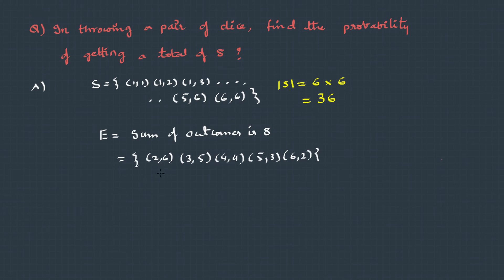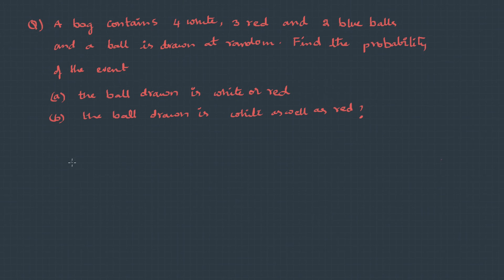Therefore, these are the possible outcomes: 2,6, 3,5, 4,4, 5,3, 6,2. In each of these cases, the sum of the two is 8, and these are 5 outcomes. So the probability is the favorable outcomes by total number of outcomes, which becomes 5 by 36.